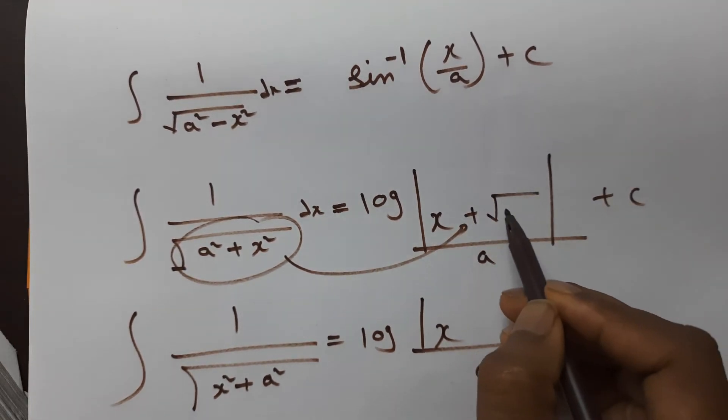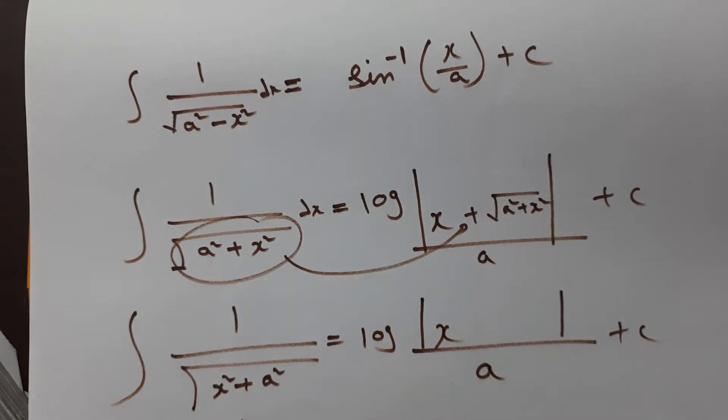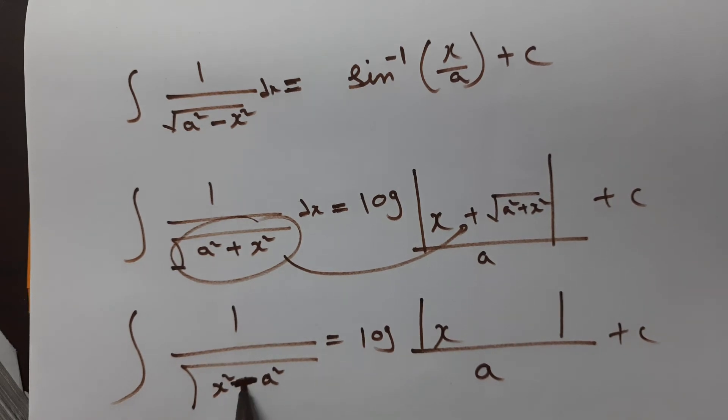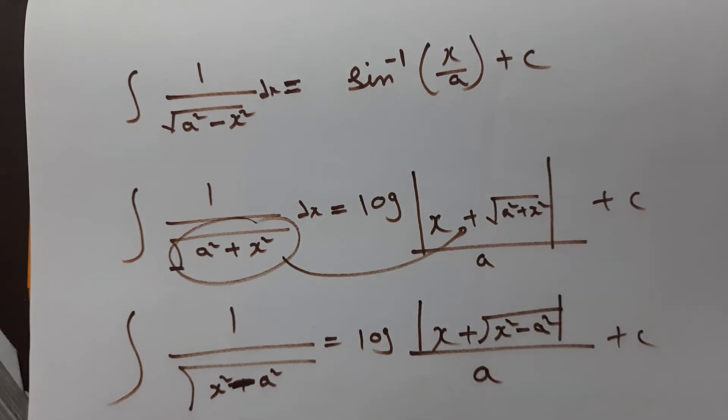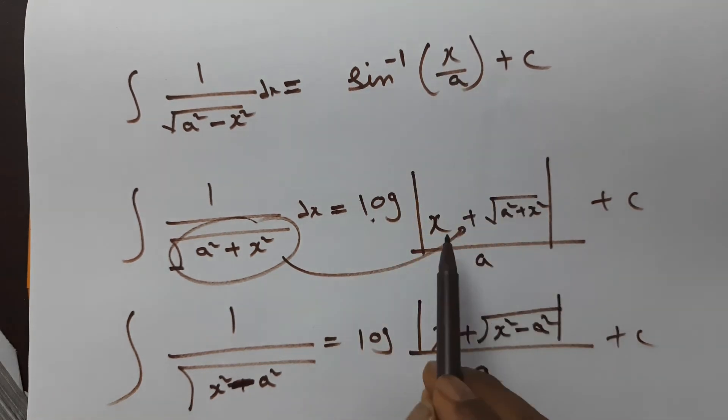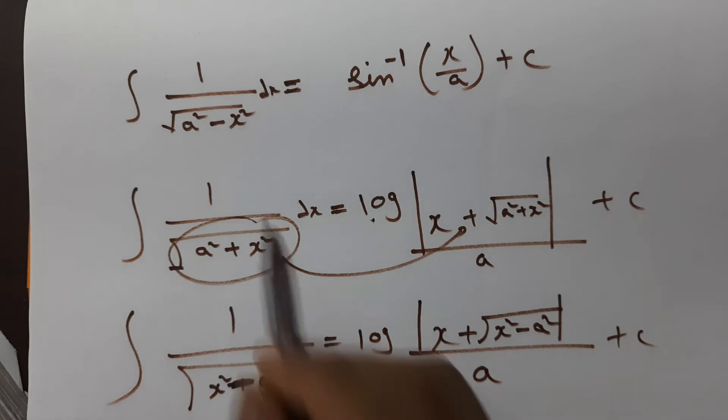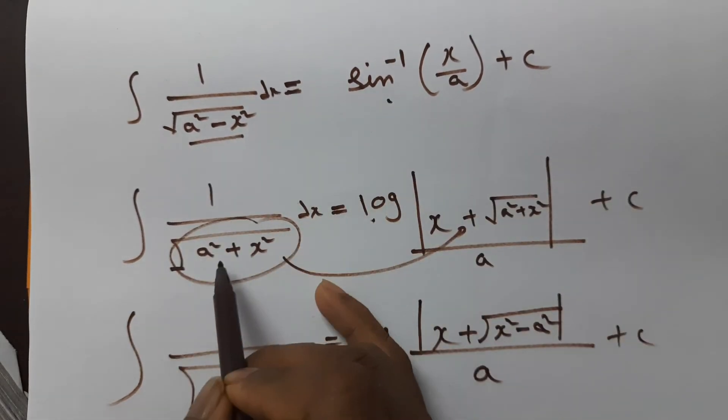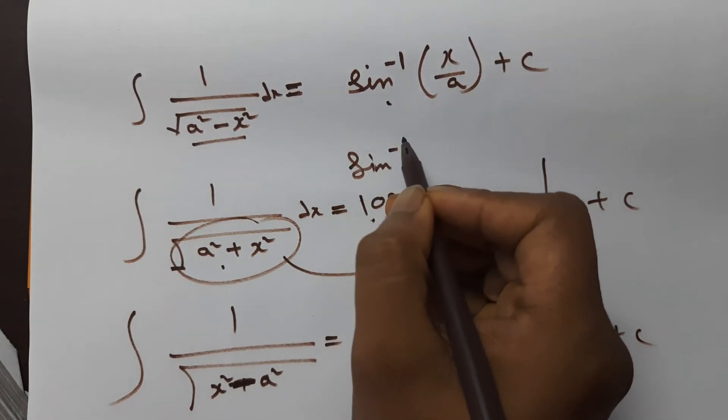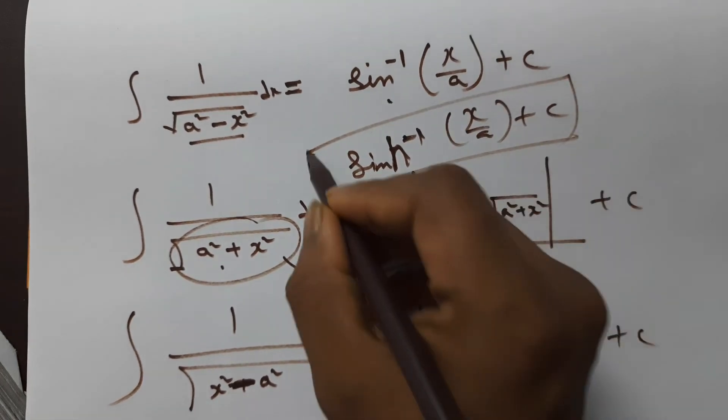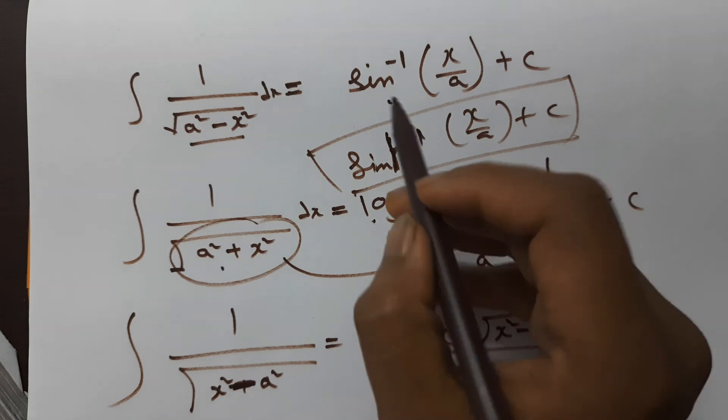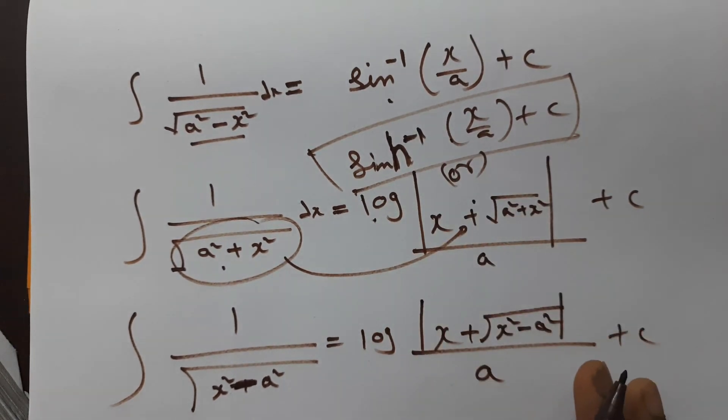Plus of root over a square plus x square. x square plus, x square minus square, same x square, a square. x by a, and x by a log, x by a, again x by a log x by a, plus c.